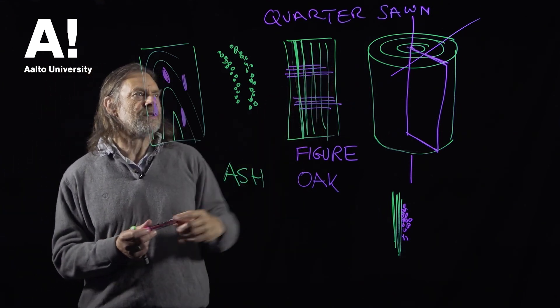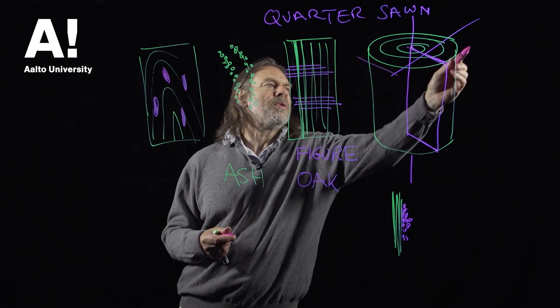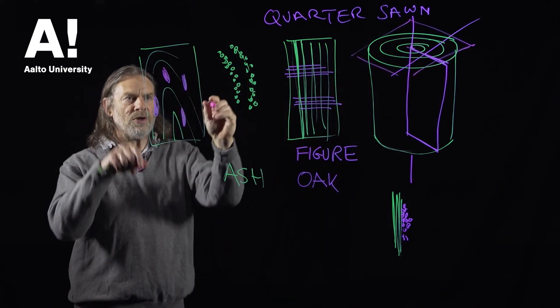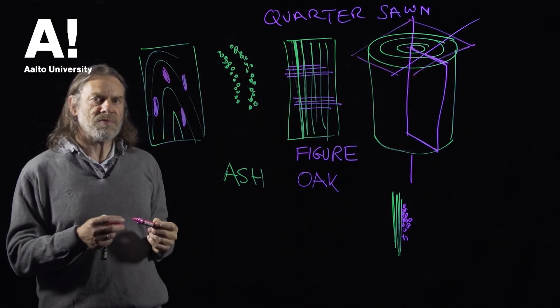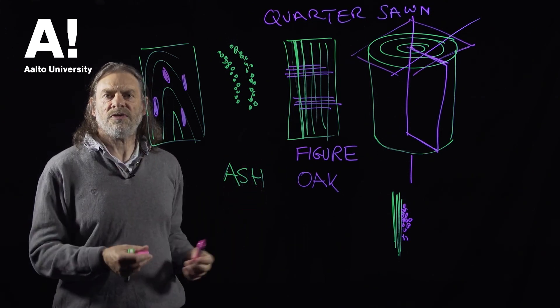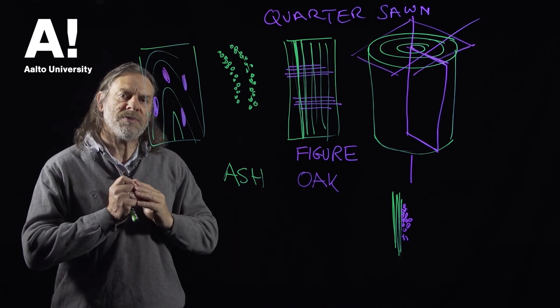And then of course we have this plane at the top which is the transverse plane, and then you'd be looking down and you'd be seeing these pores. So you can use these sorts of features to identify different wood species.